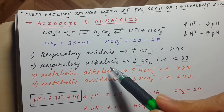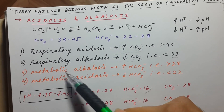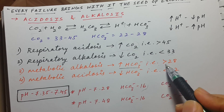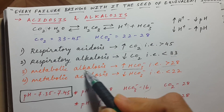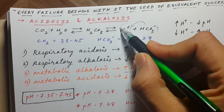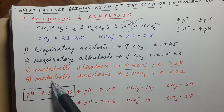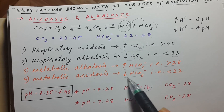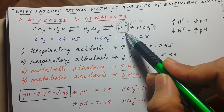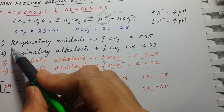Now for metabolic alkalosis and metabolic acidosis: if HCO3- increases — that is, if the level is greater than 28 — it results in metabolic alkalosis. When HCO3- increases, it binds with H+, leading to a decrease in free hydrogen ions, which causes alkalosis. Conversely, when HCO3- decreases below 22, H+ remains free in the blood, decreasing pH and leading to metabolic acidosis.